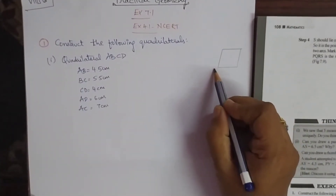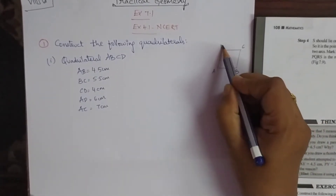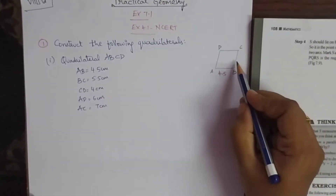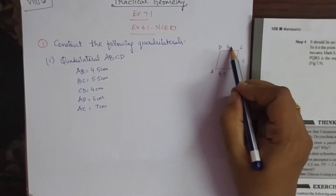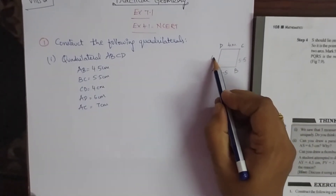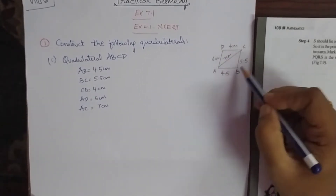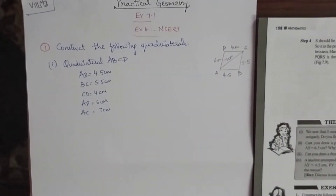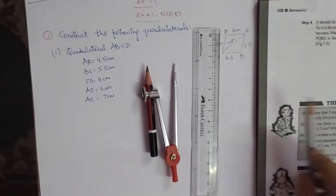Before we could start, draw a rough diagram of a quadrilateral and name it as A, B, C, D. AB is given as 4.5, BC is 5.5, CD is 4 cm, AD is 6 cm, and AC is 7 cm. So with these measurements we will start drawing. For this, you need a compass, a scale, and a pencil.